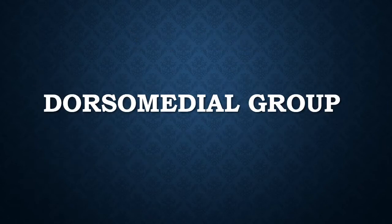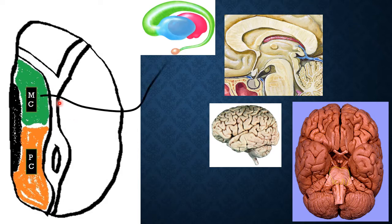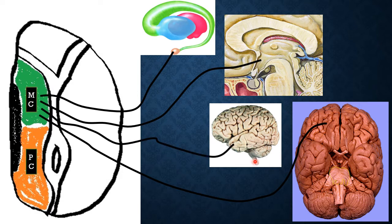Coming to the dorsomedial group: medial to the intramedullary laminae we can identify two different areas that form the dorsomedial group. This divides into the magnocellular and the parvocellular parts. The magnocellular part connects with the amygdaloid body, the lateral hypothalamus, the temporal neocortex, and the caudal orbitofrontal cortex. These are the four connections of the magnocellular part of the dorsomedial group.